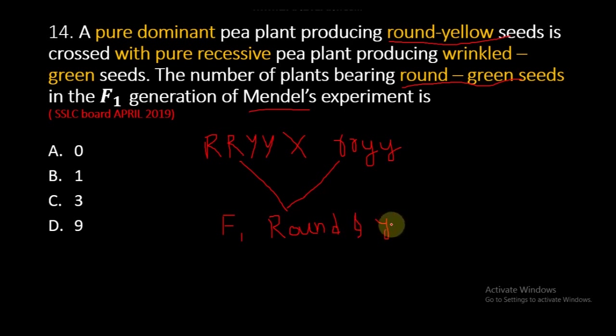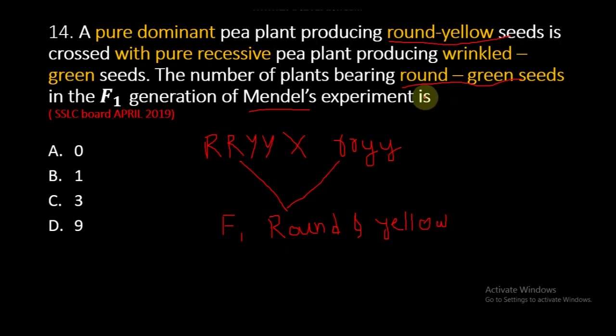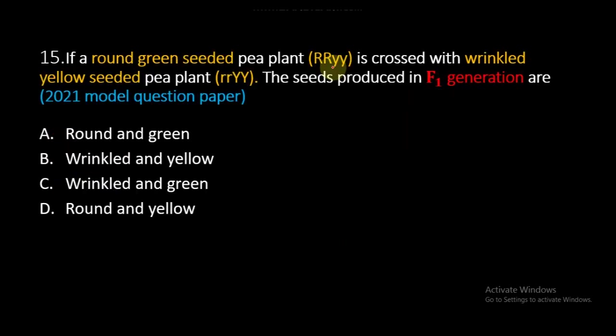All the plants in F1 generation are round and yellow seeded. Not a single plant is of round green seeds. So the answer is 0.